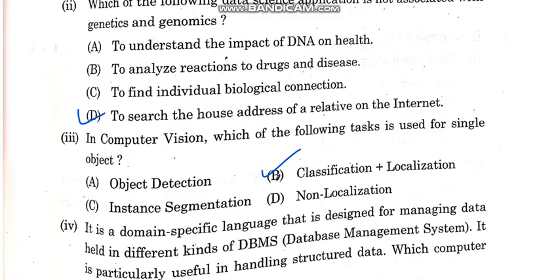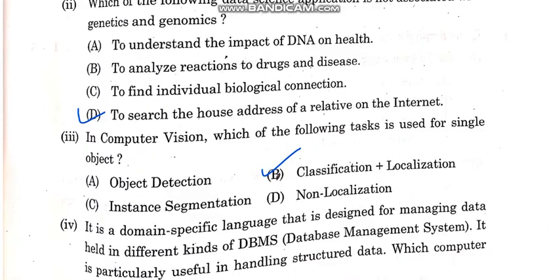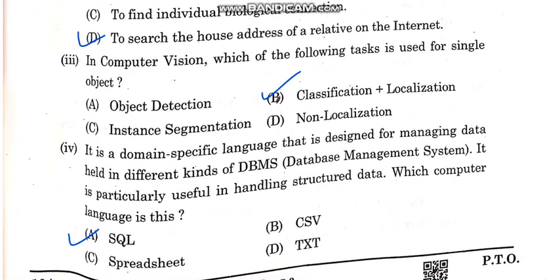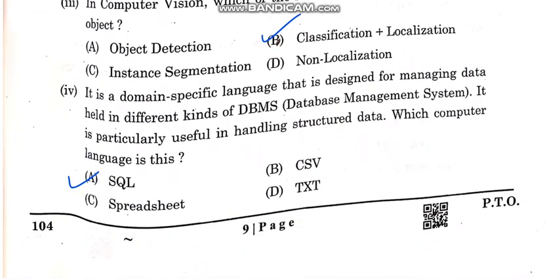In computer vision, which of the following is used for a single object? The correct answer is B option: classification plus localization.